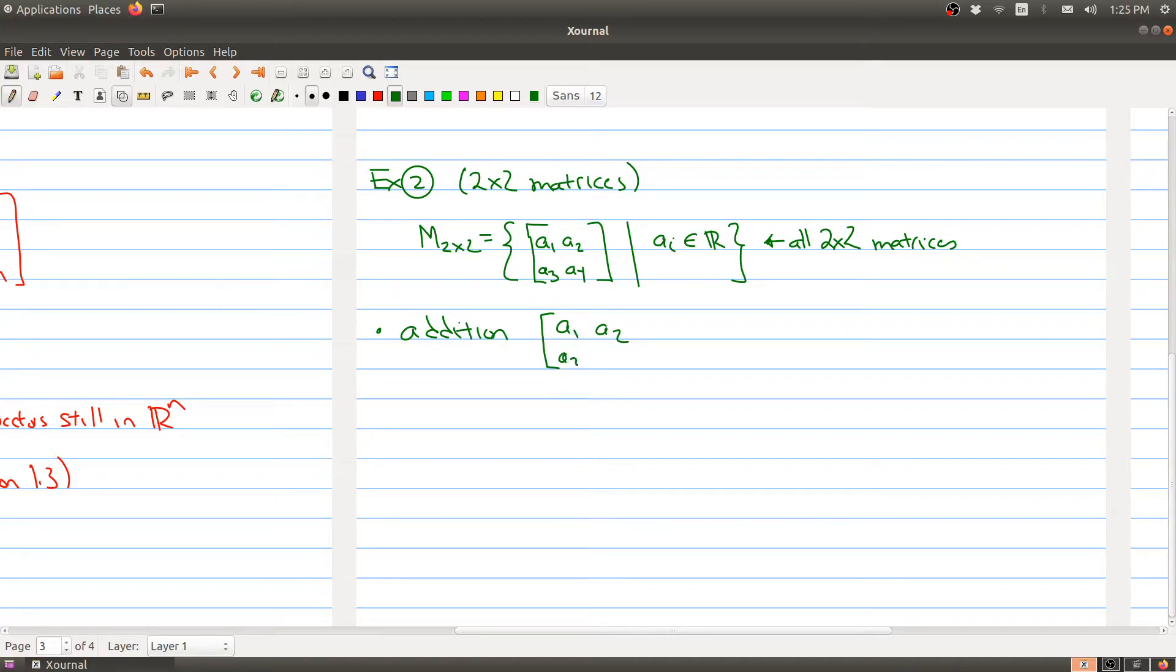Well for addition, we're just going to use regular matrix addition. So [A1, A2, A3, A4] plus another matrix [B1, B2, B3, B4] is just using regular matrix addition. We get this matrix where we add the corresponding entries in each matrix. And our scalar multiplication is going to be matrix multiplication by a scalar. So you multiply a matrix by a constant as you normally would.